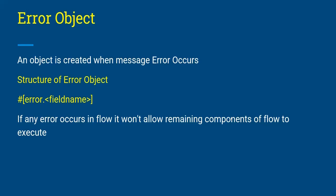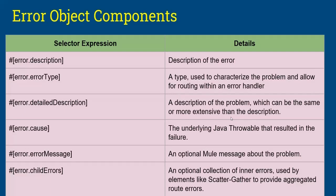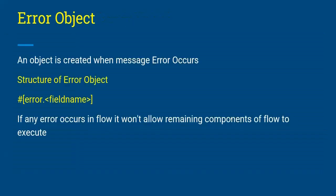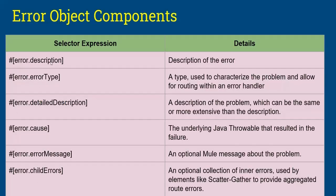These are the different components of the error object — the field names. Using the syntax 'error.fieldName' you will get details about the error. The different selector expressions available are: description, error type, detail description, cause, error message, and child errors. The two most important fields to focus on are description and error type — these are the ones we use most frequently in real-time projects.